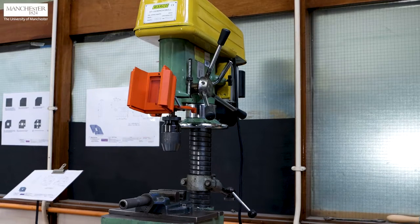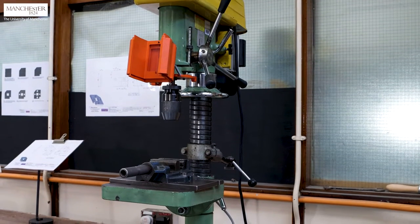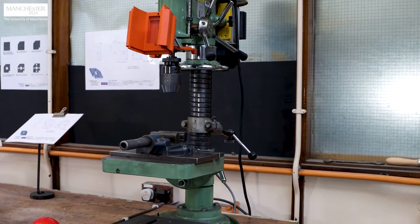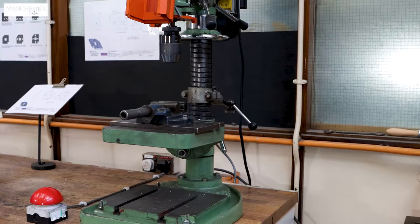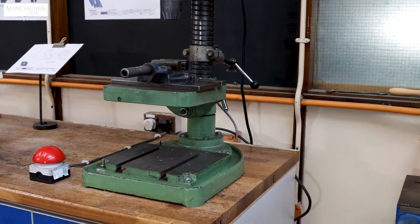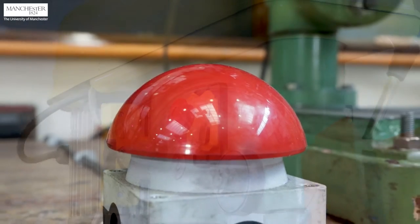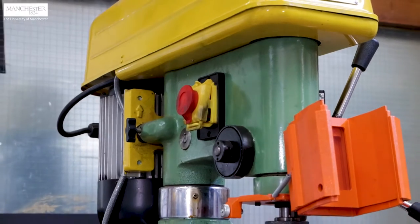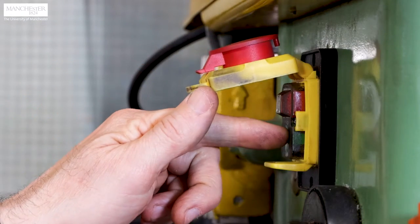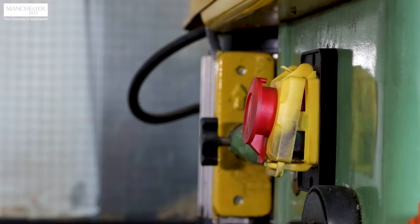Before we start, we would like to introduce you to the equipment. This is a bench drill which we will use for opening the holes. It has two emergency stop or e-stop buttons, one on the bench and the other at the side of the machine. The e-stop button on the machine is also the cover of the start and stop buttons.